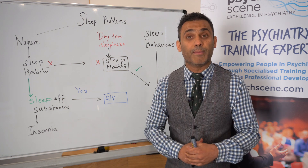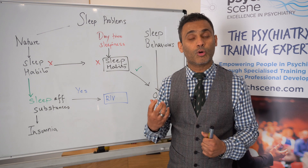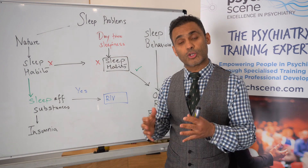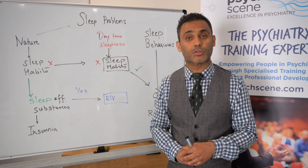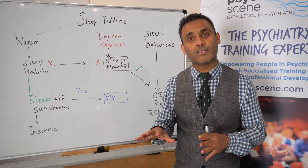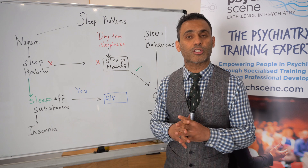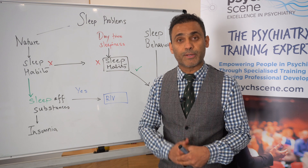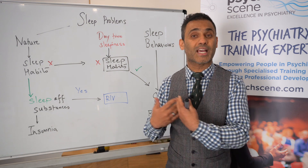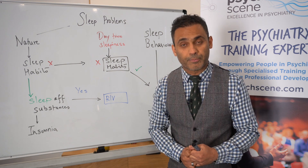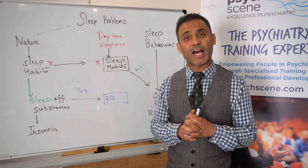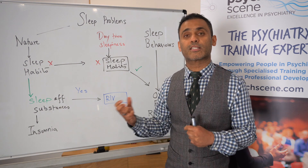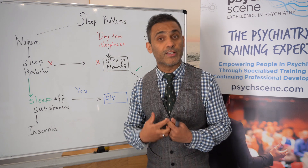Then we have melatonin, which is a naturally occurring hormone. When we're exposed to darkness, melatonin release starts, so melatonin can be a very useful agent as well. We also have other sedative agents depending on the psychiatric disorder present — for example, if depression is present and sedation is required, mirtazapine at a low dose of 15 to 30 milligrams can help as well.